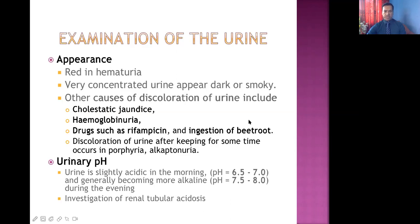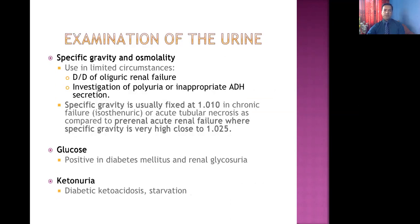The importance of urinary pH, specific gravity, and osmolality: urine is slightly acidic in the morning, around pH 6.5 to 7, and becomes more alkaline during the evening, around 7.5 to 8. Urinary pH significantly shifts toward acidic in case of renal tubular acidosis. Specific gravity is usually fixed at 1.010 in case of chronic renal failure — called isosthenuria — because of failure of the counter-current regulatory mechanism; the urine is diluted in that situation.